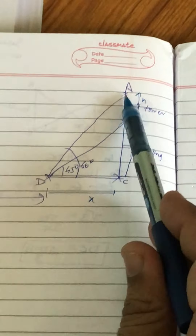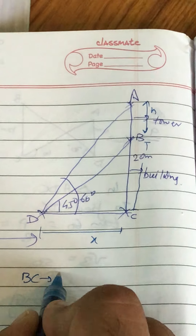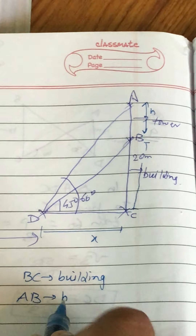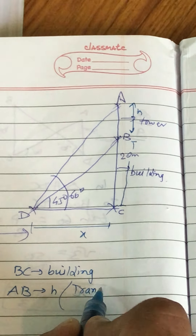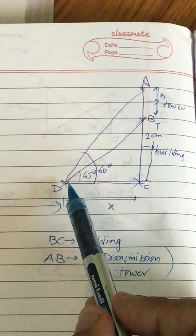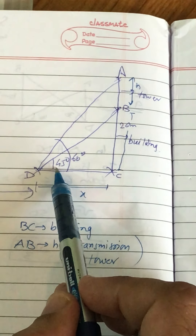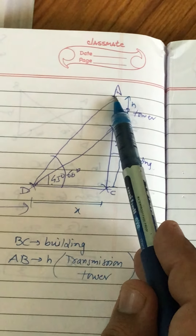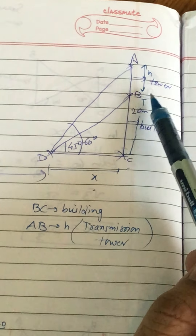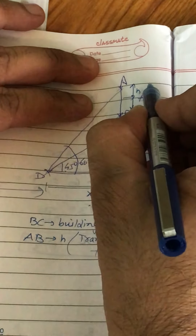Dhyan se dekhiye — ye transmission tower building ke upar hai. BC jo building hai, AB ko small h maana hai, wo transmission tower hai. Tower building ke upar hai. Yahan koi point D hai jahan se observe kar rahe hain. Agar aap building ke top ki taraf dekhte hain to angle of elevation 45 degree hai, agar tower ke top ki taraf dekhte hain to angle of elevation 60 degree hai. DC ko maine x assume kiya hai, AB ko small h maana hai, BC already 20 given hai. Agar AC aapse poochi jaye to wo 20 plus h hogi.